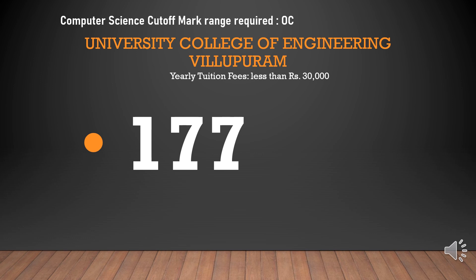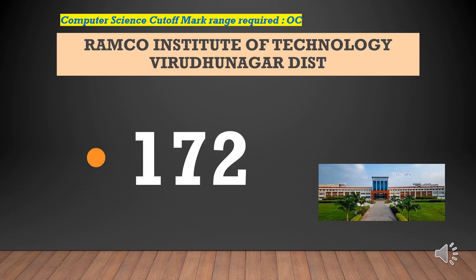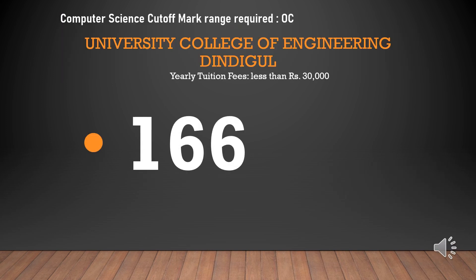Yearly tuition fees less than Rs. 30,000. Ramakrishna Institute of Technology — cut-off required for CSEOC is 172. University College of Engineering Dindigul — cut-off required for CSEOC is 166. Yearly tuition fees less than Rs. 30,000.